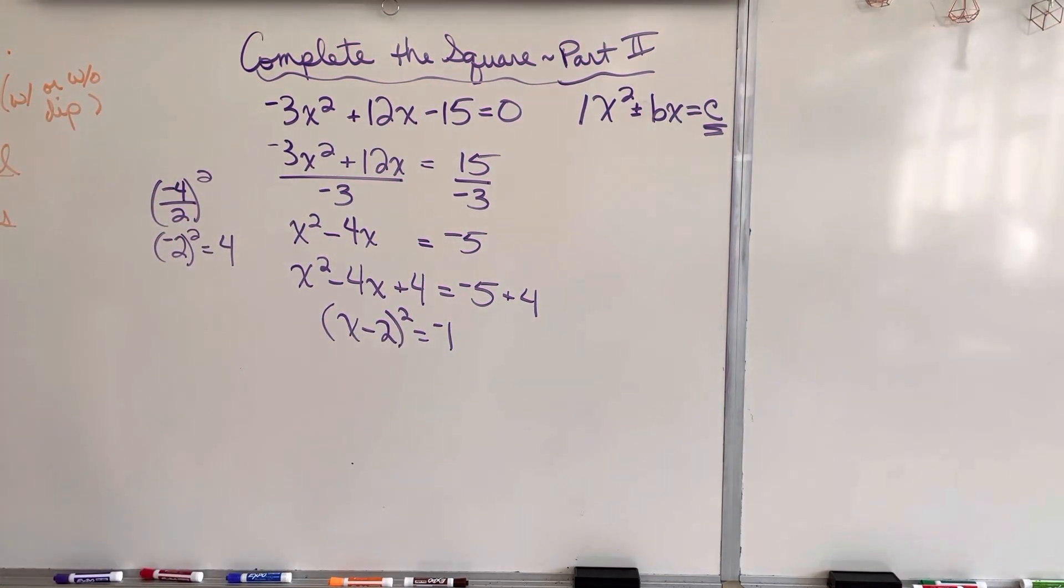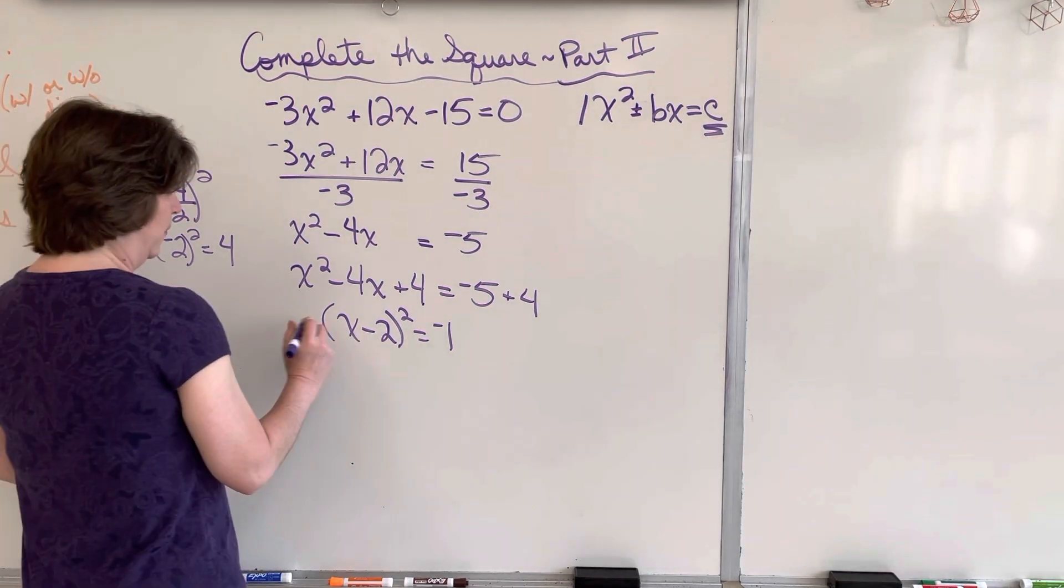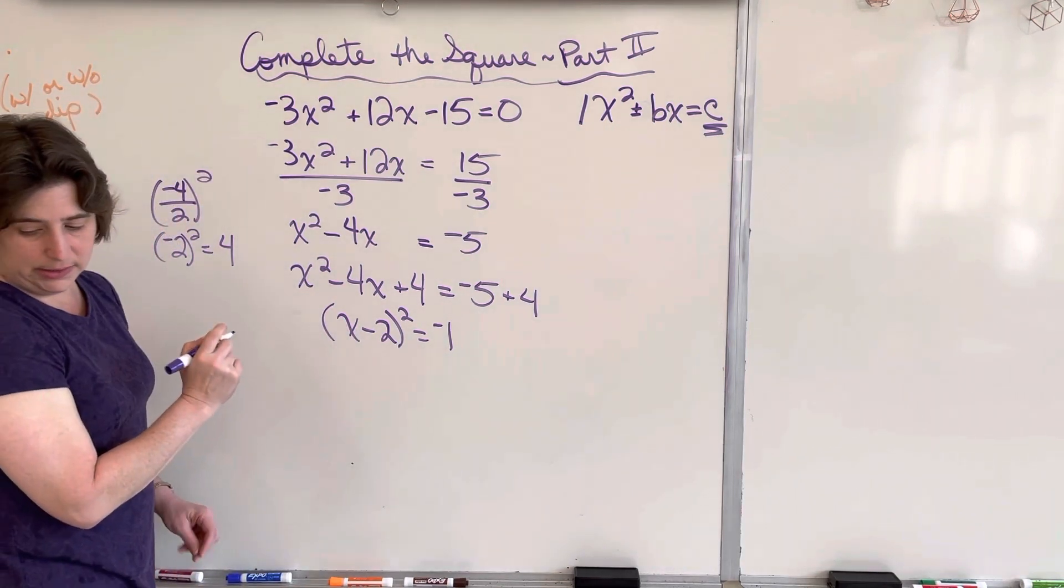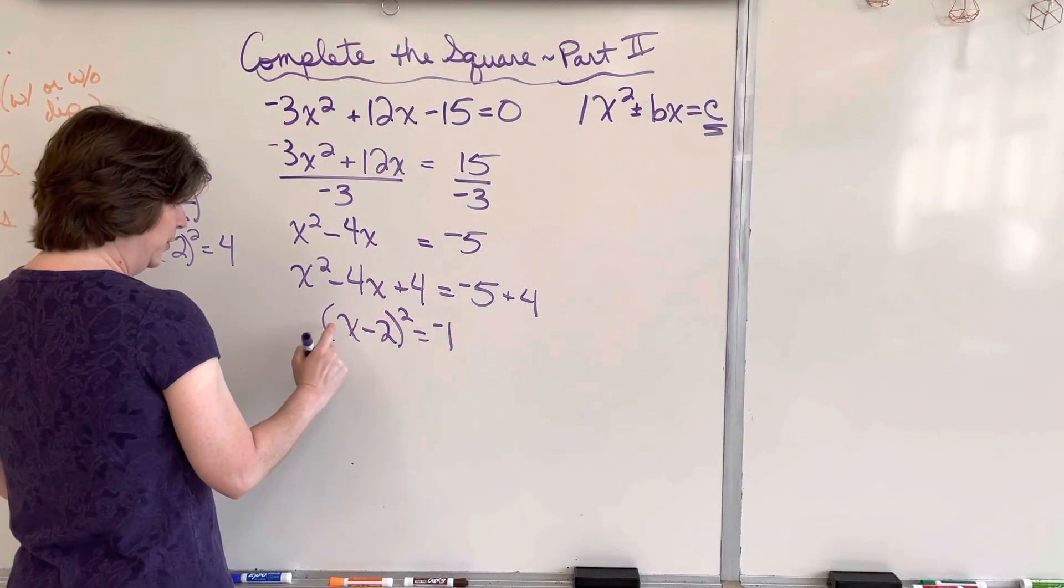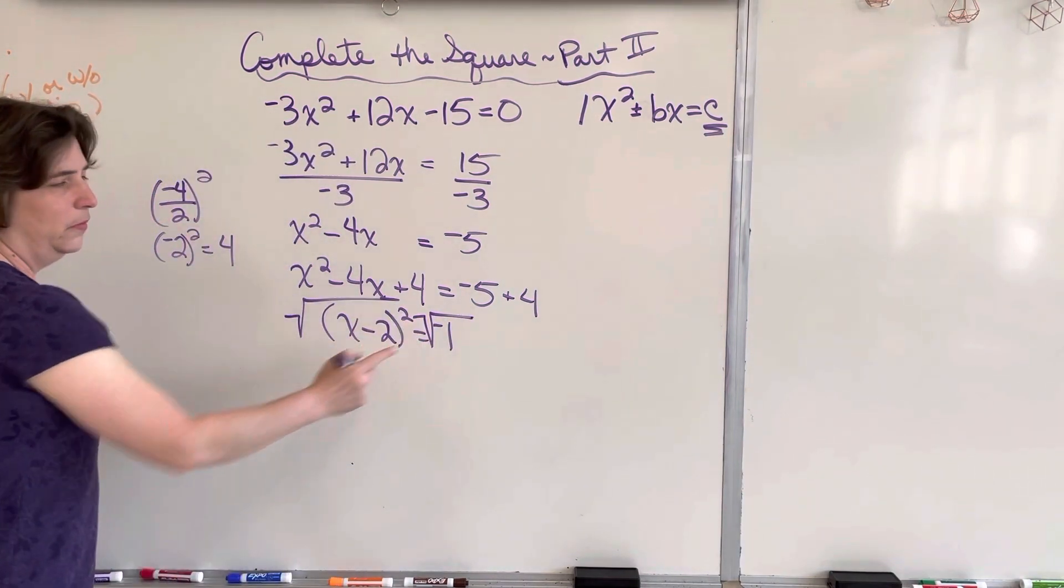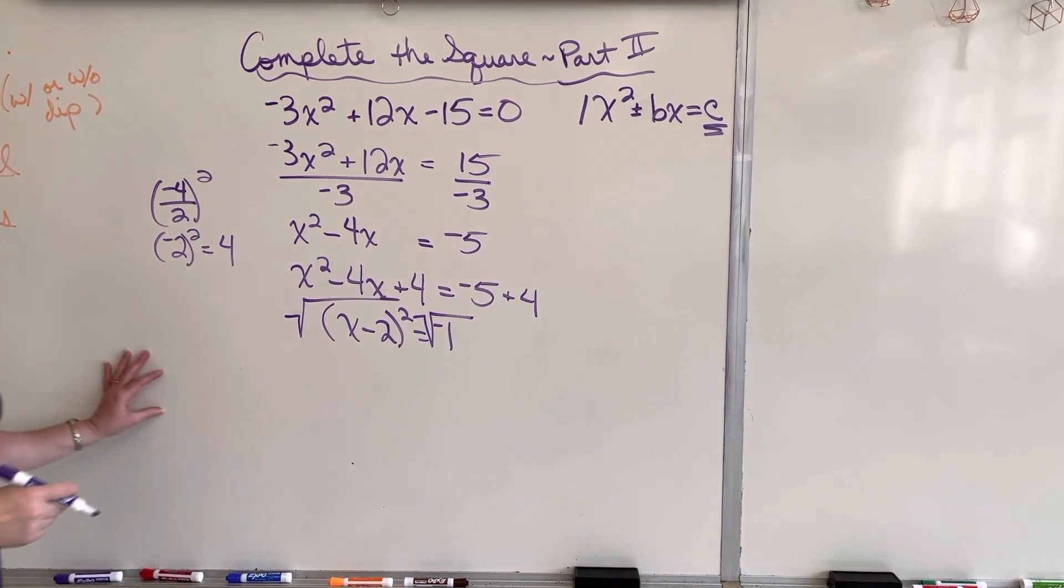This is going to be x minus 2 squared equals negative 1. Now, I'm going to stop right now because our next step would be to factor this, and after I factored it, take the square root of both sides. But once I would take the square root of both sides, what do I notice? Square root of a negative 1. I can't do that. That's an imaginary number.